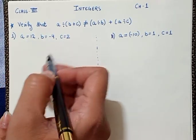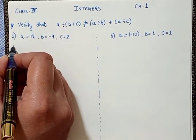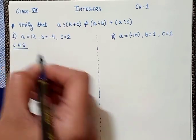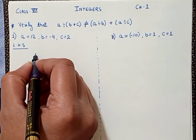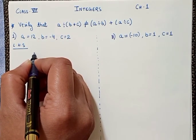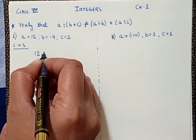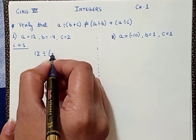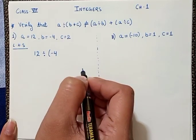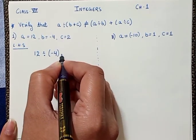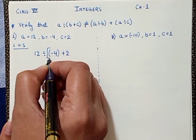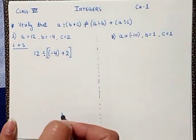Putting the values of a, b, and c, we have 12 divided by, in a bracket, minus 4, bracket close, plus 2, in a capital bracket to cover all this. Now let's solve this.